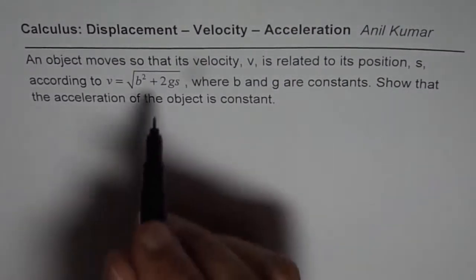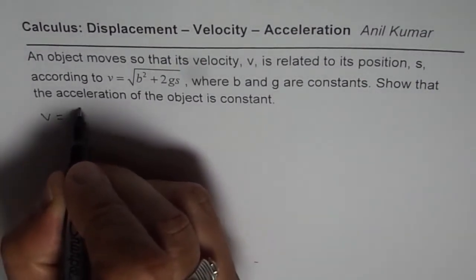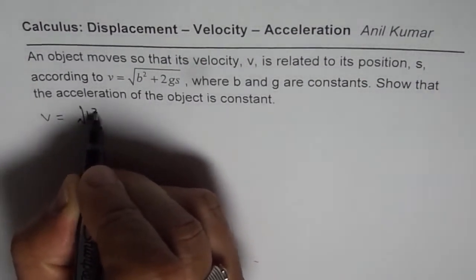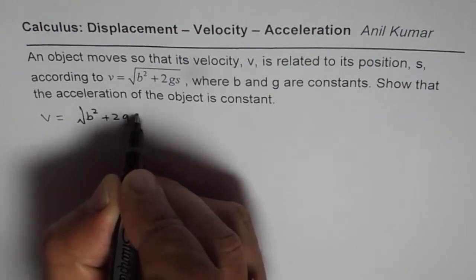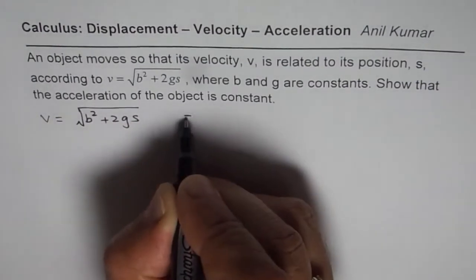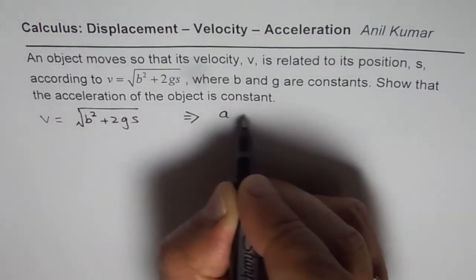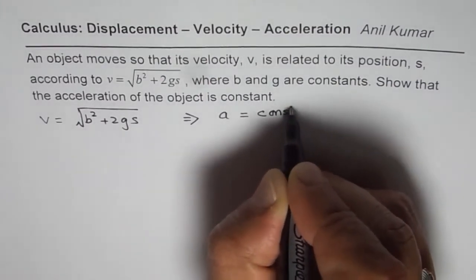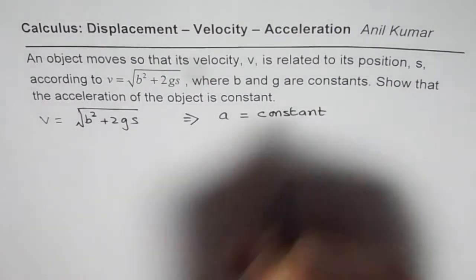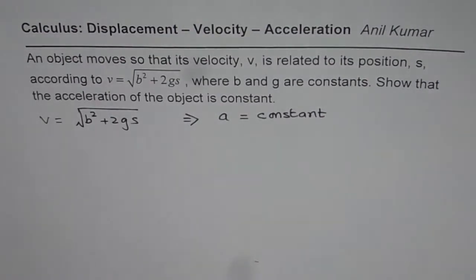So what we need to show is: we are given v = √(b² + 2gs), and we have to prove that acceleration equals constant. That is what we need to prove. You can pause the video, answer the question, and then look into my suggestion.